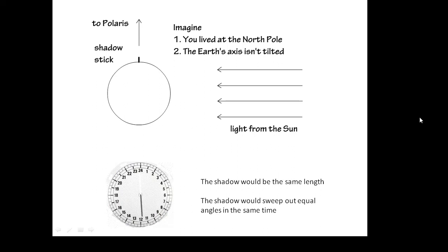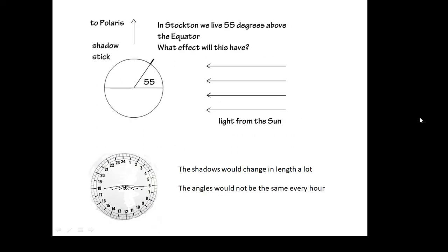The problem is that we don't live at the north pole, and also the earth's axis is tilted. Our latitude isn't 90 degrees — in fact most of my class live in Stockton and their latitude is 55 degrees, so they live 55 degrees above the equator. That has an effect, and also because the earth's axis is tilted, that has an effect as well. As a result, the length of the shadows changes a lot throughout the day and the angles aren't the same. Around midday all the shadows are much closer together; at the beginning and end of the day the angles are much bigger, further apart.